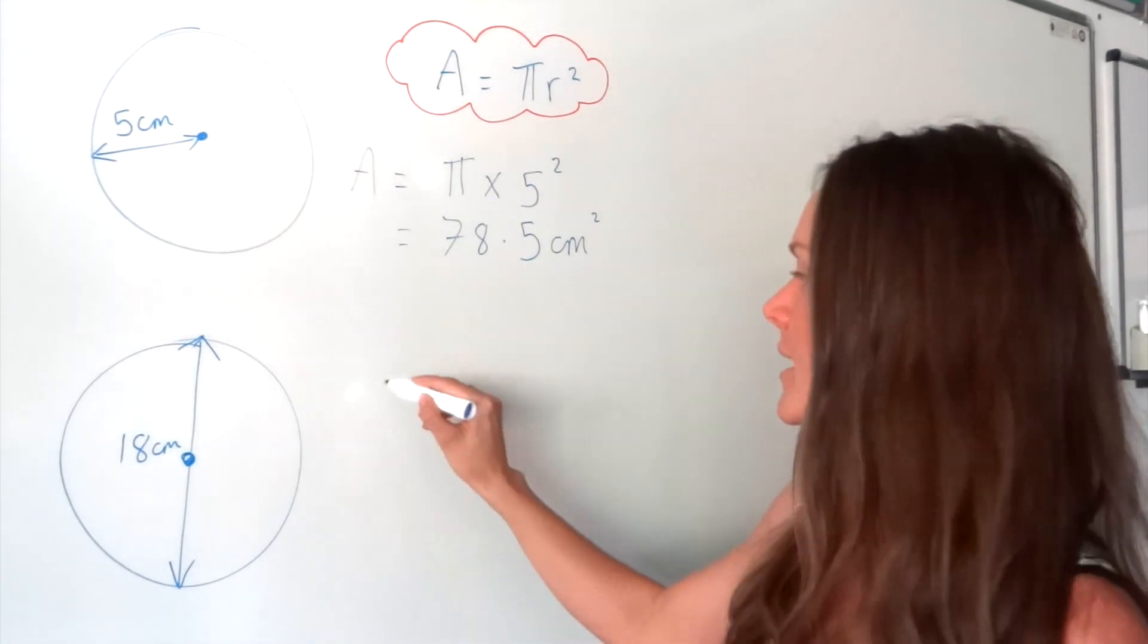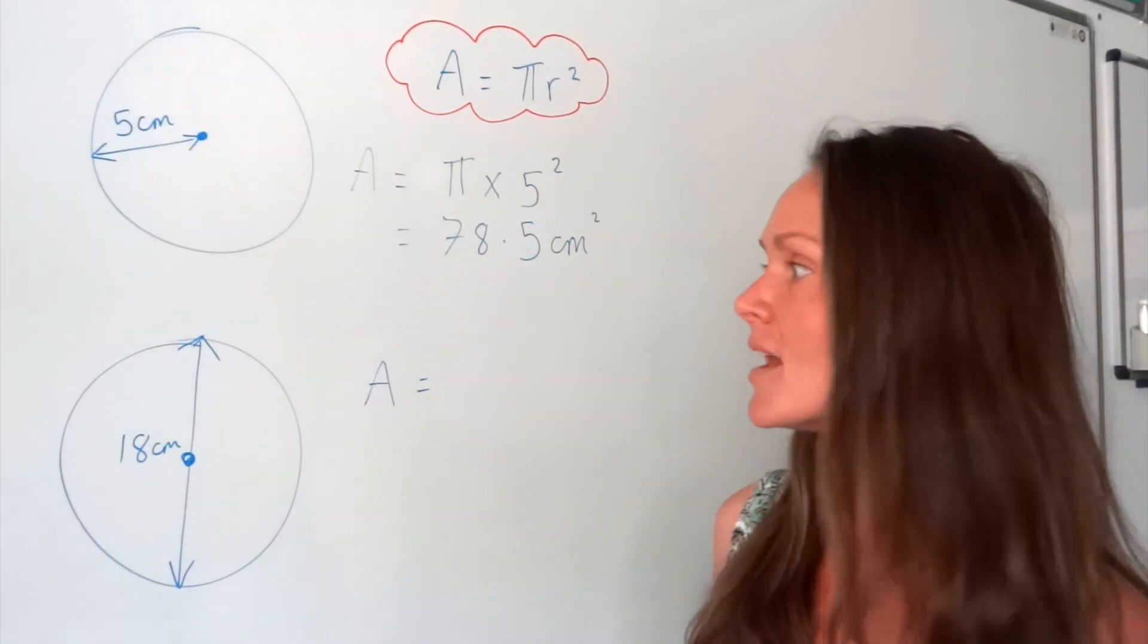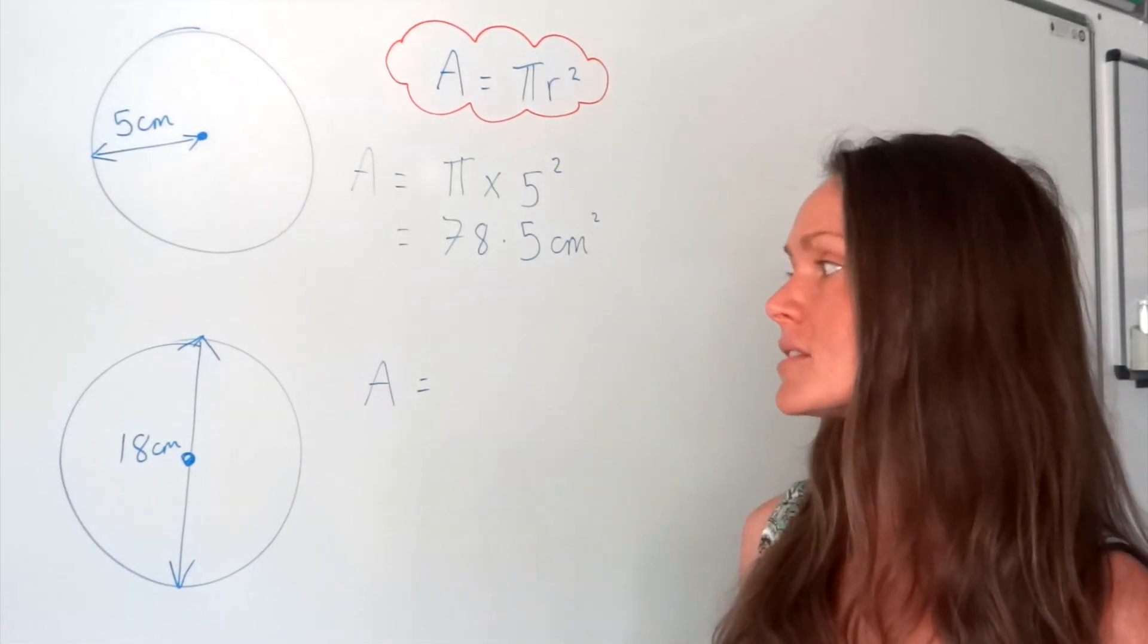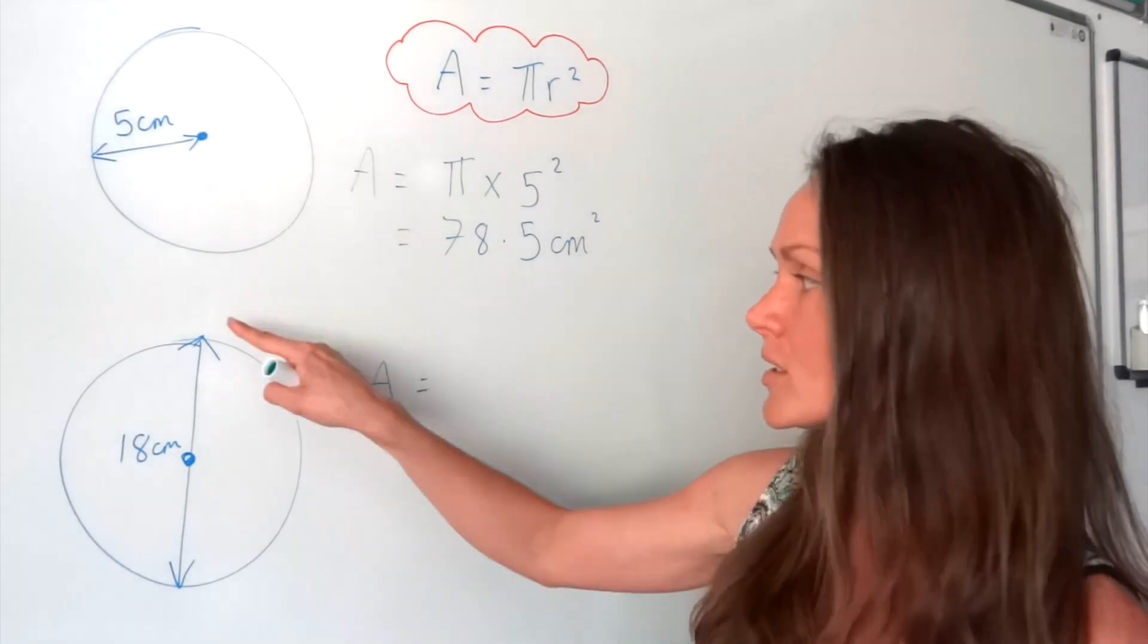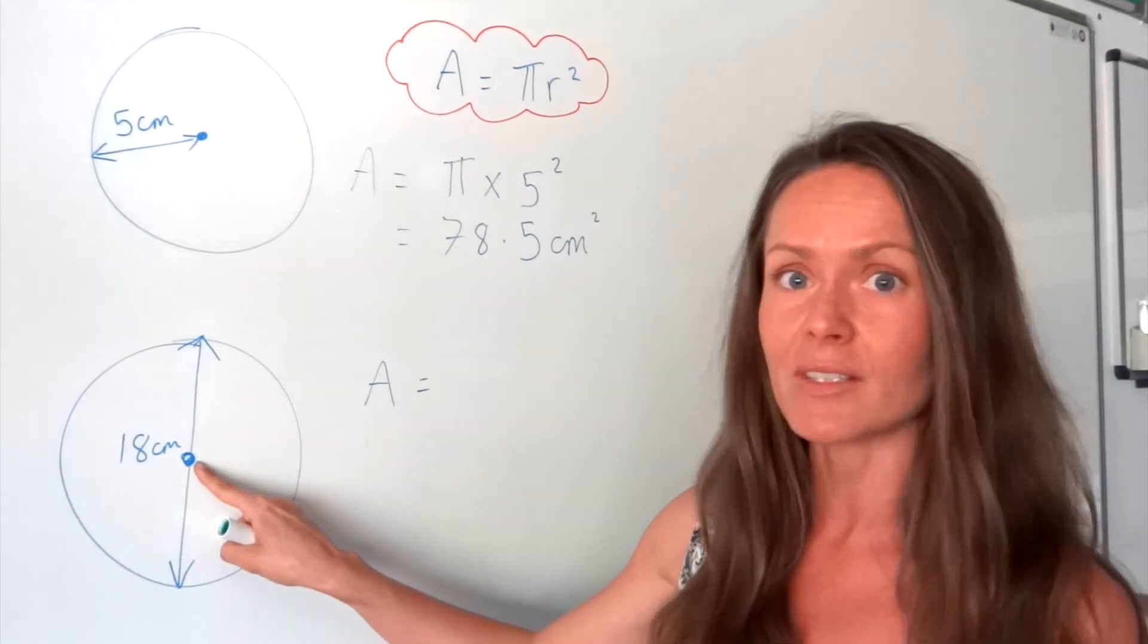Now, in the next one, it's the same formula, pi multiplied by the radius squared. Except in this one, the radius is not given to us. In this one, we're given something called the diameter, which is the distance all the way across the circle, passing through the centre point.